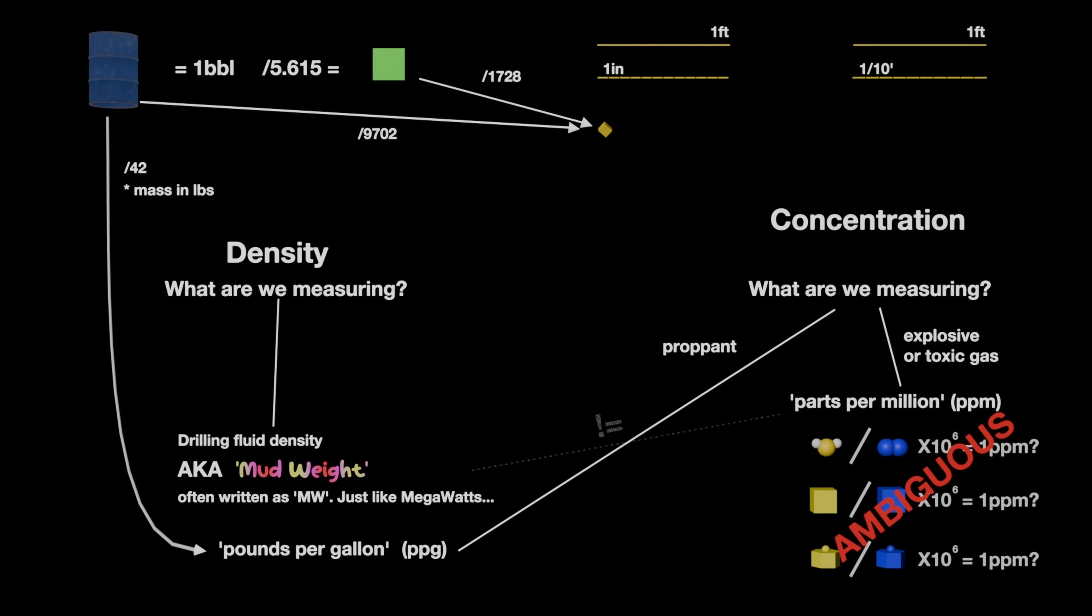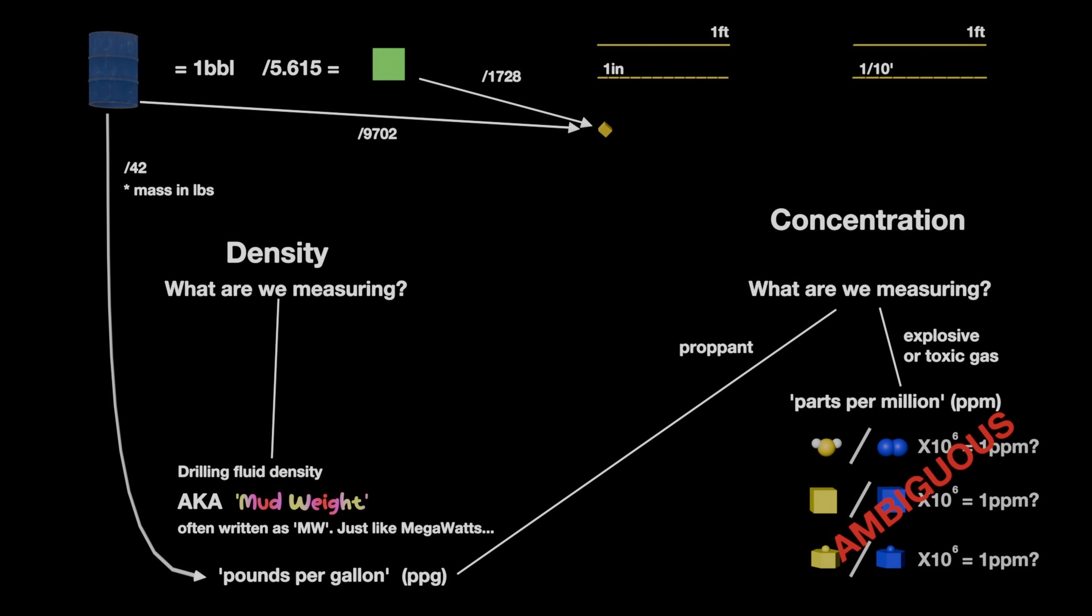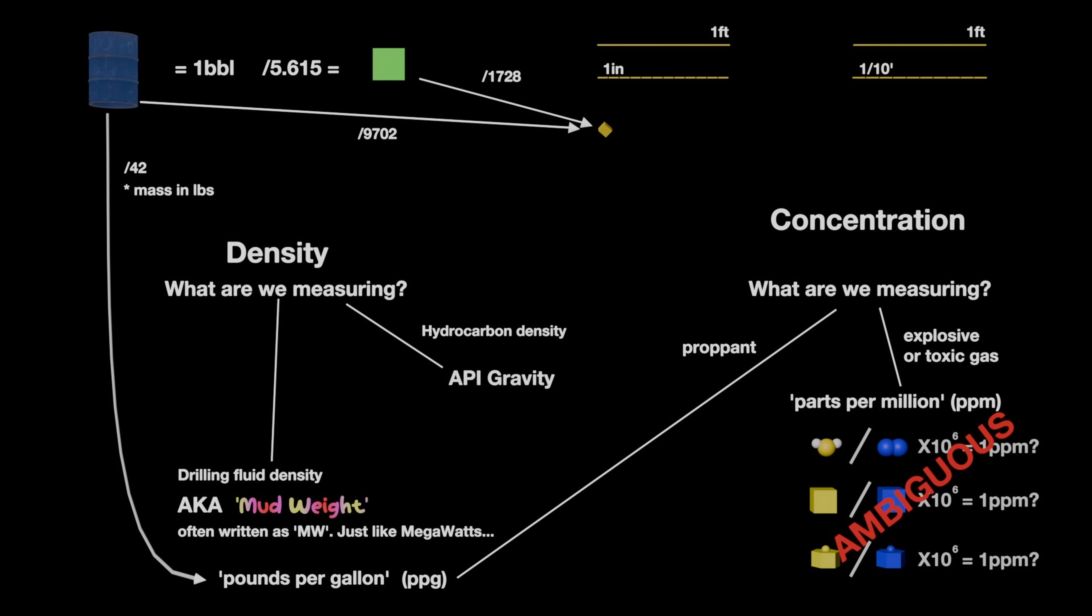We're still not done. There's another unit of density, API gravity. The API stands for American Petroleum Institute. I don't think this is used in calculations, it's just used to express the nature of produced hydrocarbons. It's an arbitrary rescaling of specific gravity, which itself is an arbitrary unit. I have no idea why it exists.